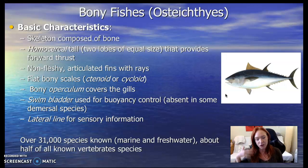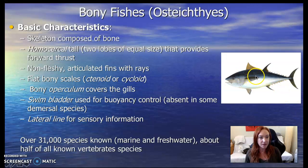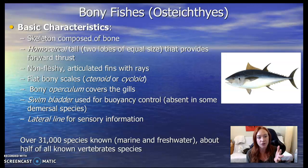For buoyancy, bony fish use an organ called a swim bladder — it's basically a balloon in their back. And they have a lateral line for sensory information. If you look along a fish's side, they usually have a line of little pits going down their side. Those are sensory — they can sense movement and pressure changes in the water, basically telling them who's around them.